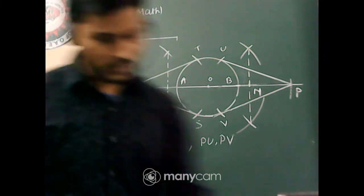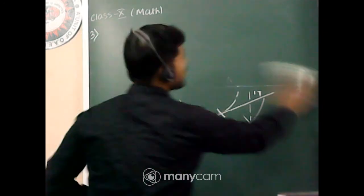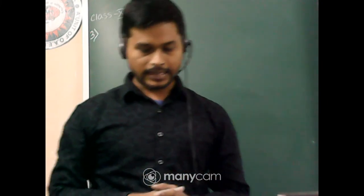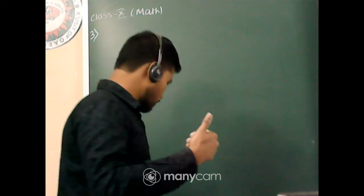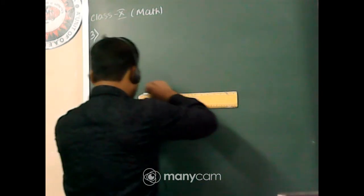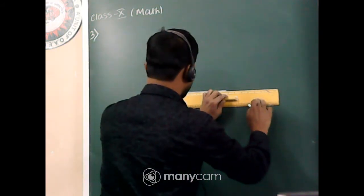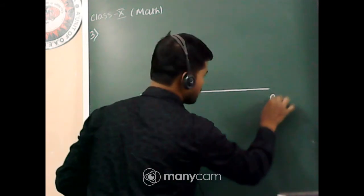Let's solve question number five — the last question for today. Question 5: draw a line segment AB of length 8 centimeters. Taking A as center, draw a circle of radius 4 centimeters, and taking B as center, draw a circle of radius 3 centimeters. Construct tangents to each circle from the center of the other circle.